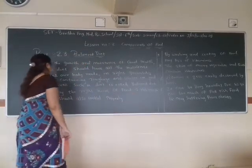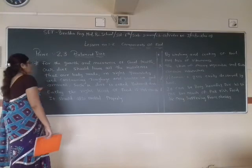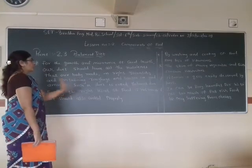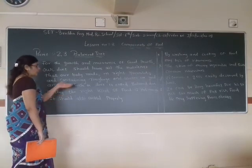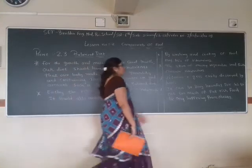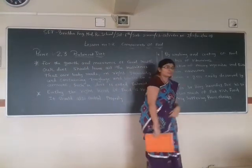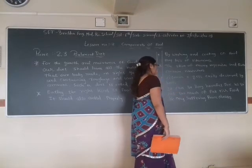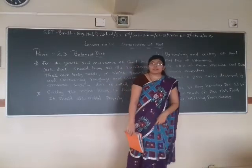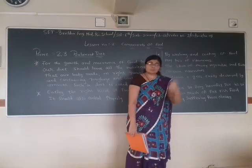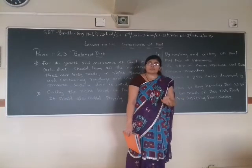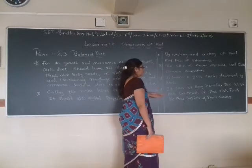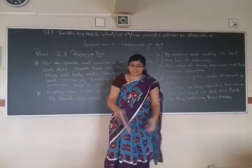Now, a recap: our diet should have all the nutrients our body needs in the right quantity, containing roughage and water. Eating the right kind of food is not enough — it should also be cooked properly. Cooking and washing of food may cause loss of vitamins. Over-cooking causes more loss of vitamins. The skin of vegetables and fruits contains vitamins and minerals — for example, apple skin contains most of the vitamins, so if we peel it off and then eat the apple, most of the vitamins are lost with the peel. Vitamin C is easily destroyed by heat. It can be very harmful to eat too much fat-rich food.